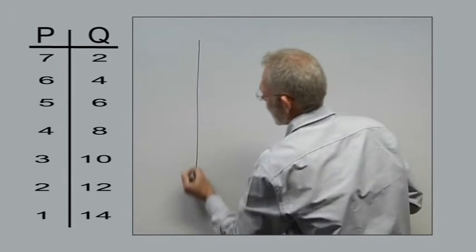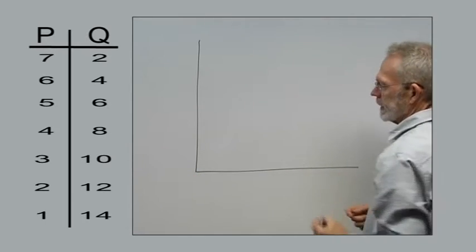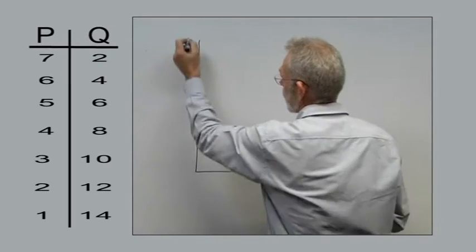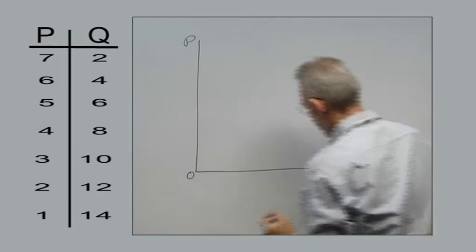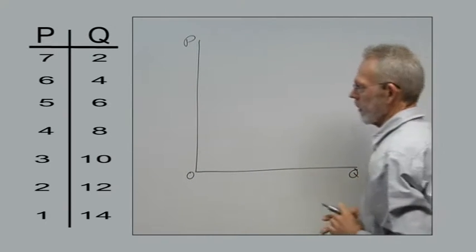Now, we start off with drawing the axis. Then we name the axis. Price on the vertical axis and quantity on the horizontal axis.